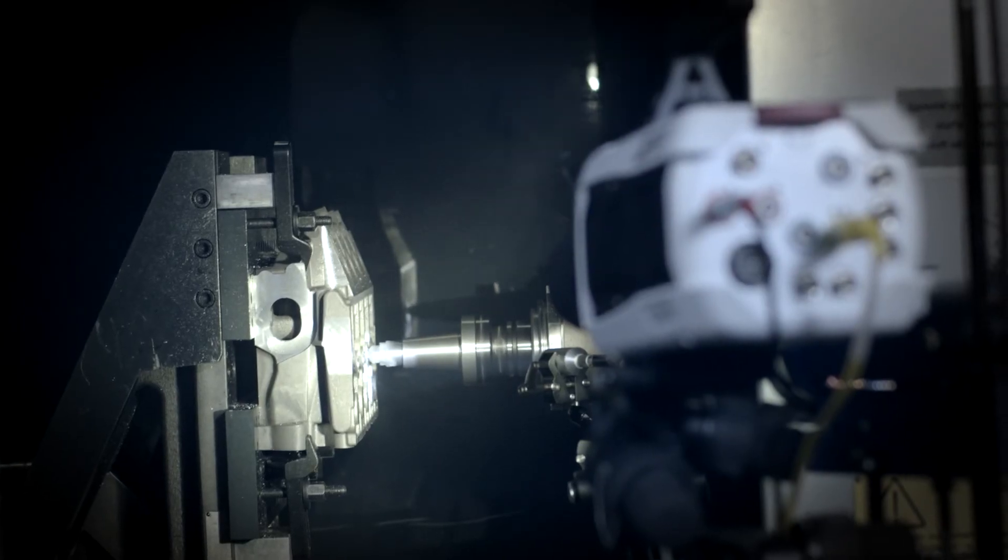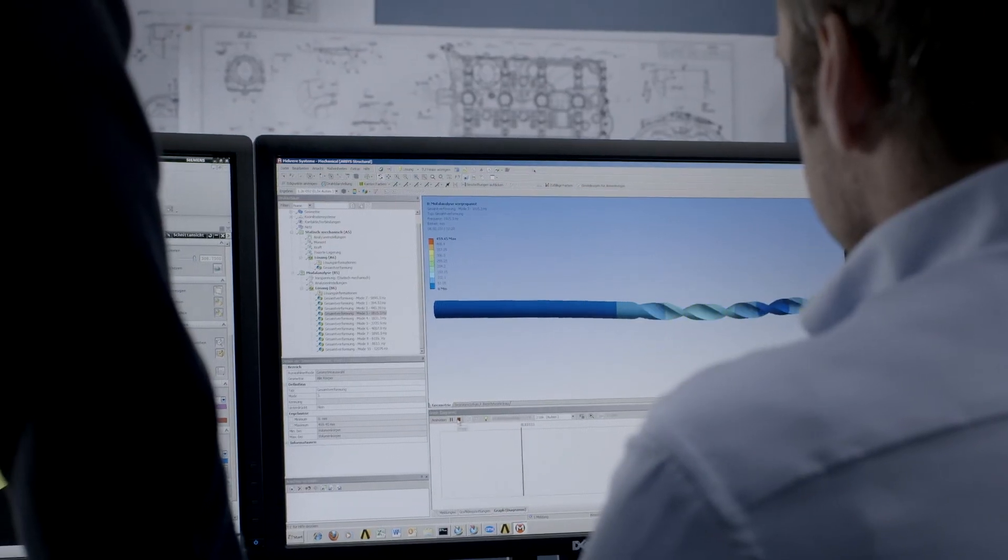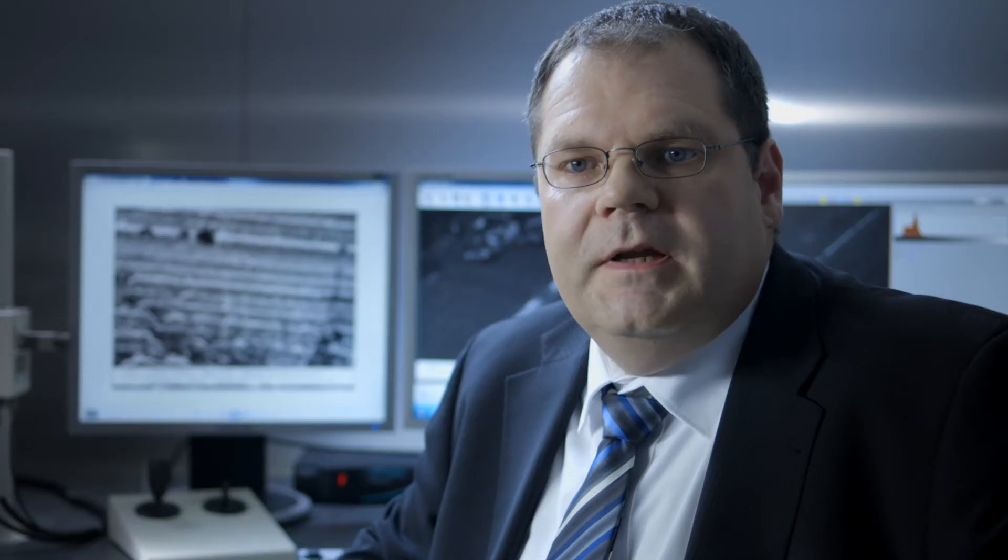Here in Albstadt, for example, we have over 100 employees in the research and development department. We are continually working on improving tool materials, surface treatments, and optimizing tool geometries. As we grind and coat with the same machines throughout the world, we are quickly able to put our designs and innovations into practice.